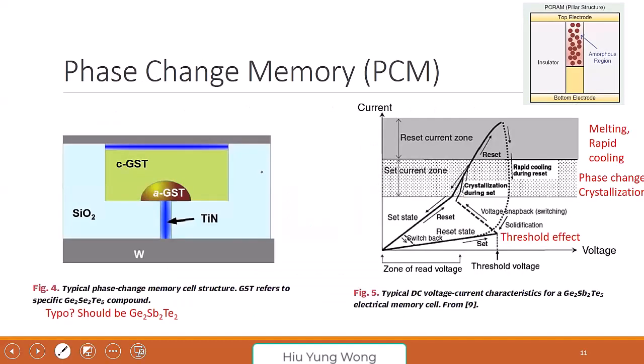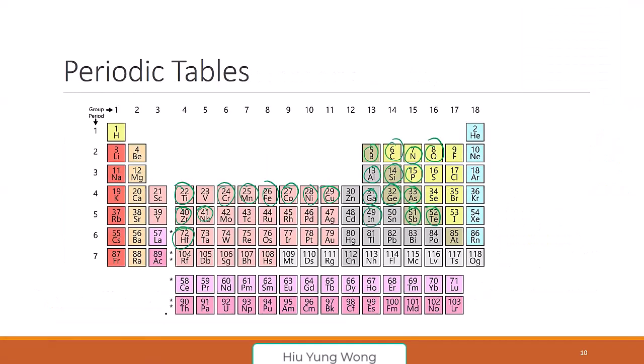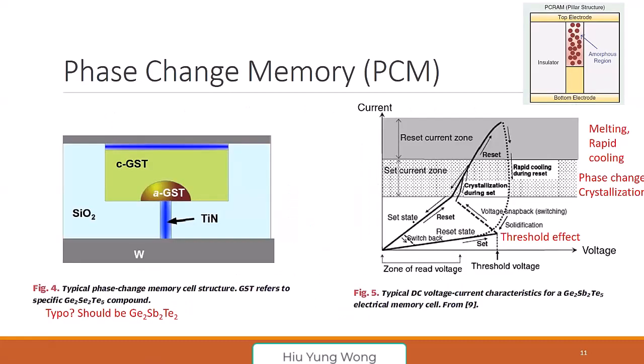Now the one I want to talk about is the phase change memory, only one slide, but we just want to know how it works. I think there's a typo in this paper. It should be germanium, antimony, tellurium - I might pronounce it wrong. This one TE and SB, instead of SE, not selenium.